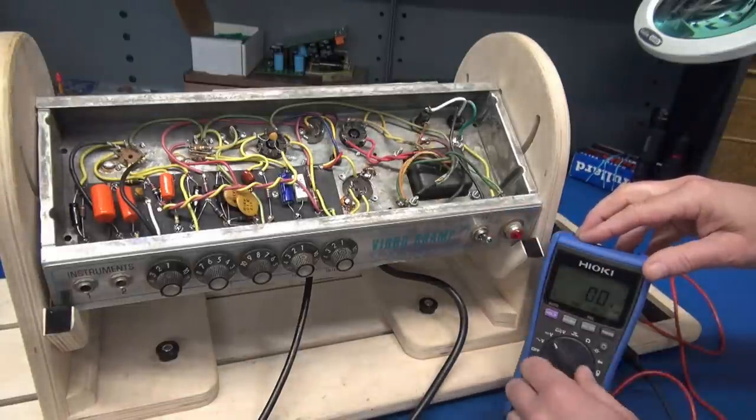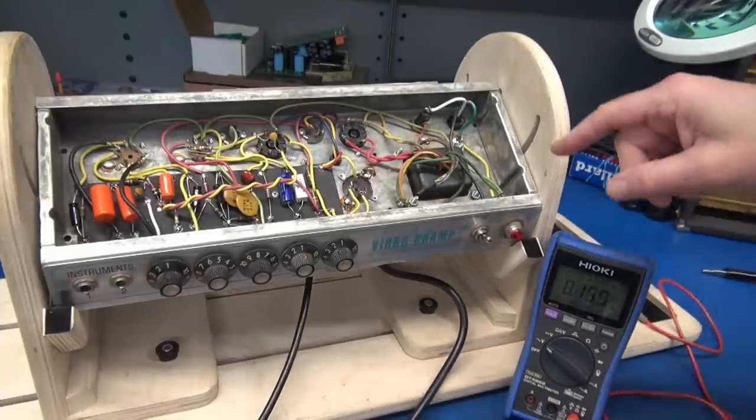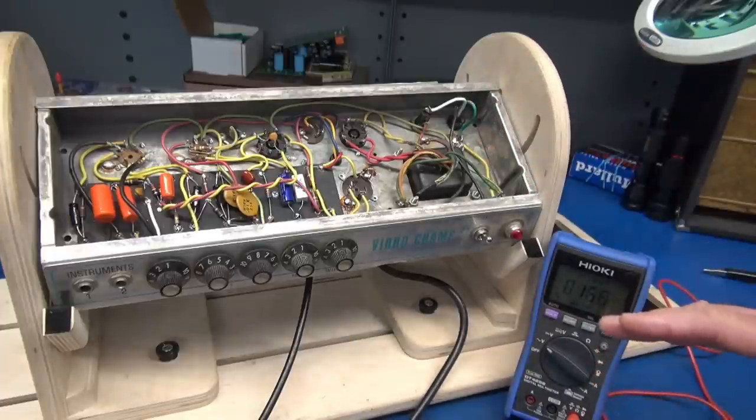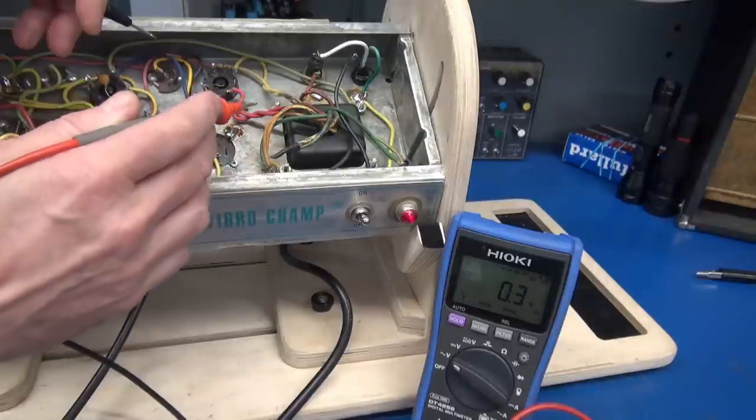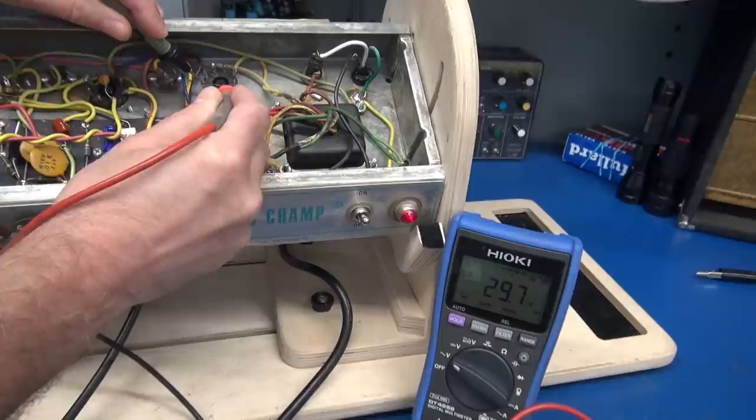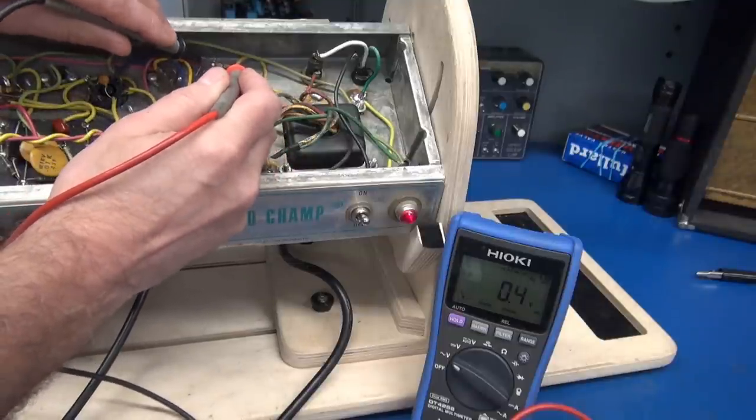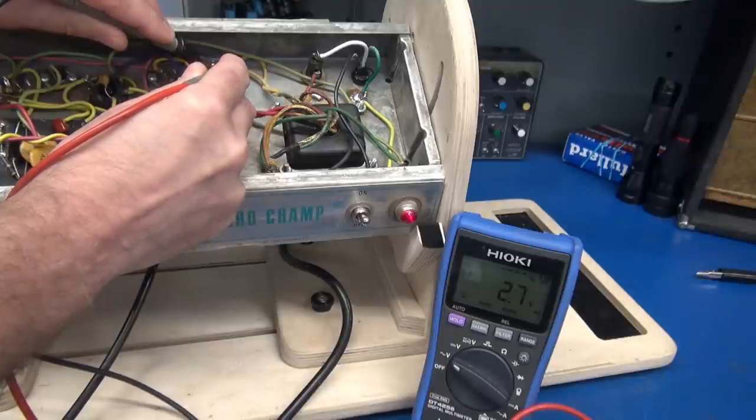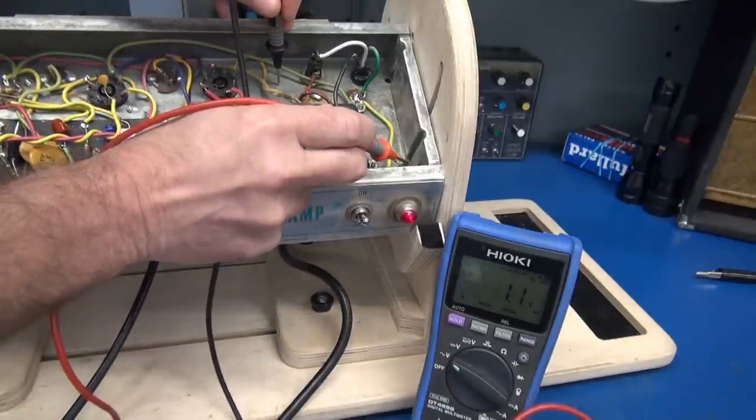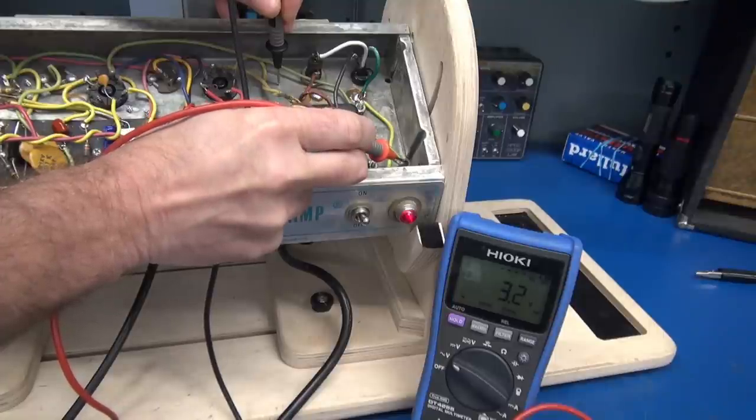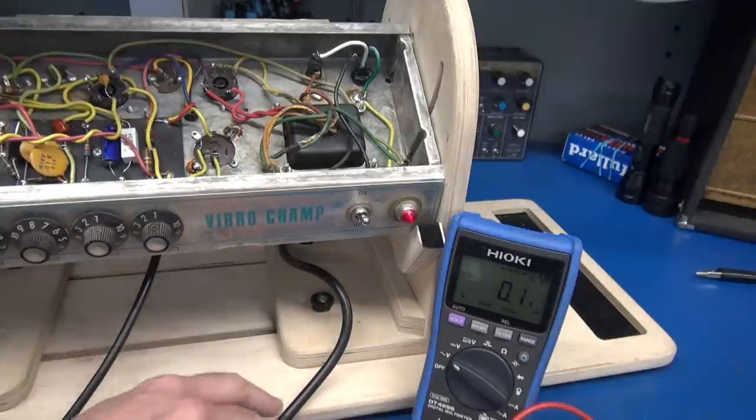But before we condemn it, let's check the outputs direct off of that power transformer. Now we're going to go to volts AC, switch my leads, and we're going to do a little bit of probing on the filament lines and the high voltage windings. Here's my high voltage, about 376 to the center tap. We got 188. Here's my five volt winding that's feeding the 5Y3 rectifier - I only have 2.7 volts. Let's take a look at our six volt AC winding. I got 3.2 volts. So all the outputs of that power transformer are half of what they should be.